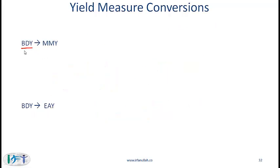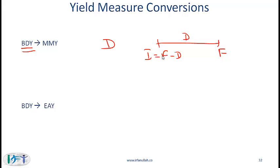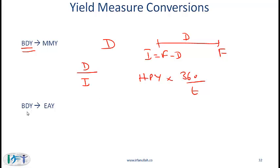If you are given the bank discount yield, use it to compute the discount. Knowing the discount and the face value lets you find the investment amount — the face value minus the discount. You can then compute the holding period yield as the discount divided by the investment amount. The money market yield is the holding period yield multiplied by 360 over T, and the effective annual yield follows from the holding period yield using the standard compounding formula.